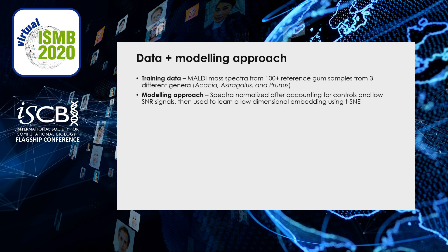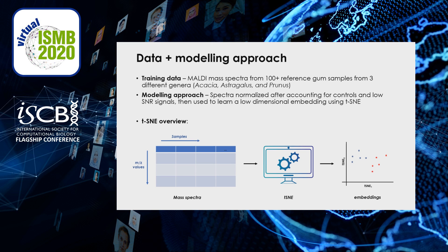The training data we have is MALDI mass spectra from 100+ reference gum samples with known species annotations. These samples are from three major genera: Acacia, Astragalus, and Prunus. Our modeling approach, once the data is cleaned, is to use a dimensionality reduction technique called TSNE. TSNE takes high-dimensional data — in this case, intensities for hundreds or thousands of ions over an M/Z range across hundreds of samples — and reduces it to a visualizable two dimensions where similar points are grouped together and dissimilar points are further apart in the low-dimensional embedding.